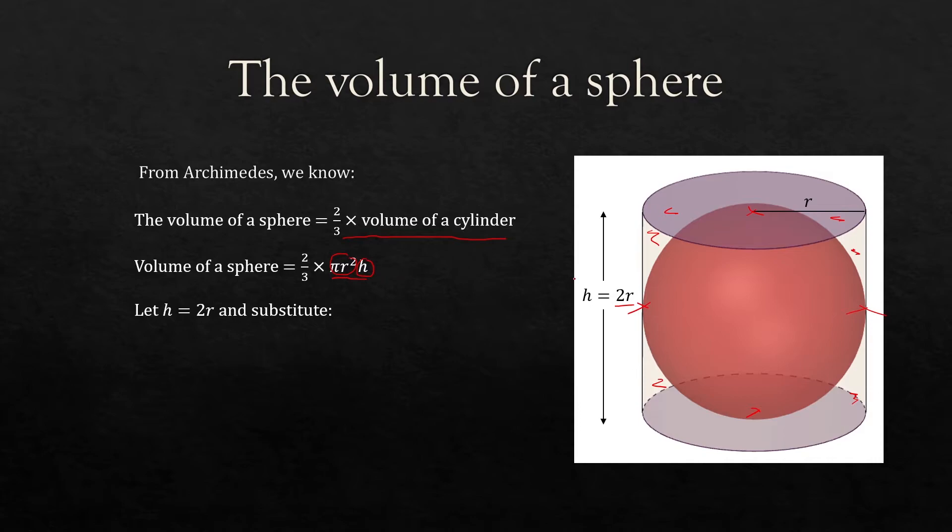So we'll let h equal 2r and substitute this into our formula. So the volume of a sphere is two thirds times the base area times the height and we put 2r in for the height.